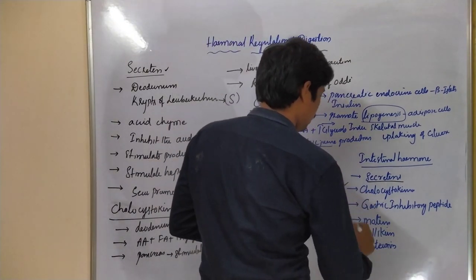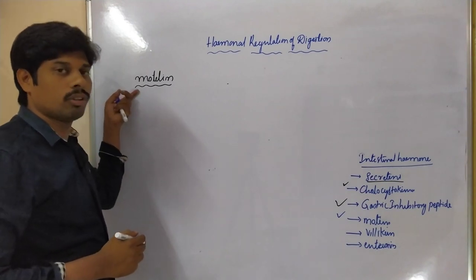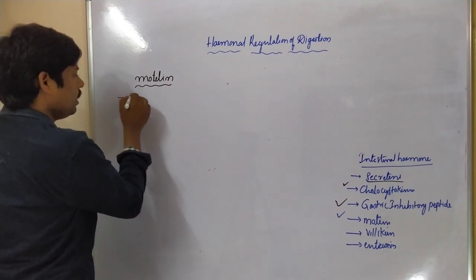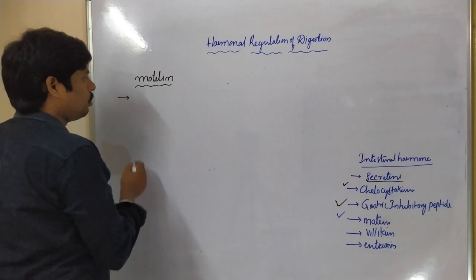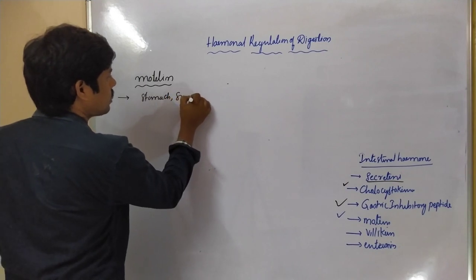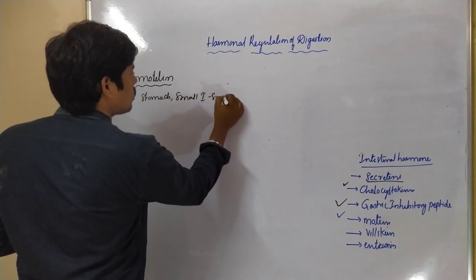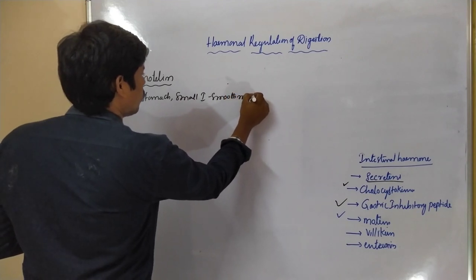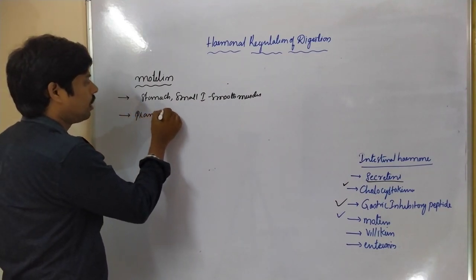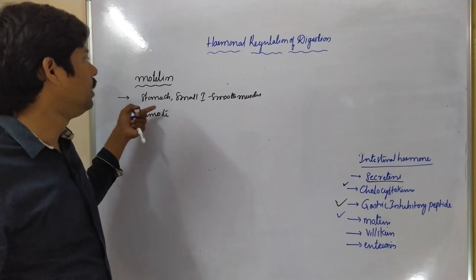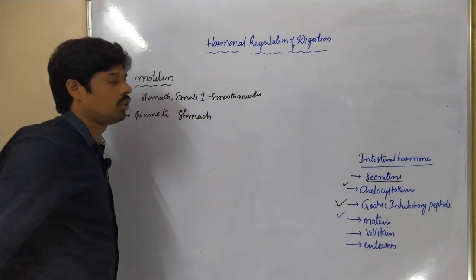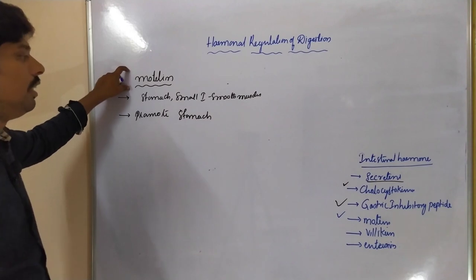The next hormone is motilin. Motilin is a hormone secreted by the small intestine; its secretion is stimulated by acid chyme. It acts on the smooth muscles of the stomach and small intestine, and promotes the production of acids from the stomach.